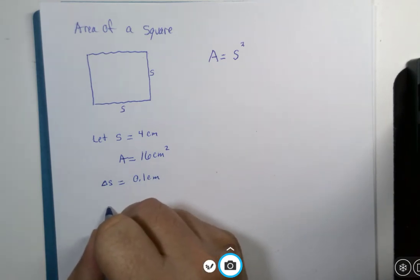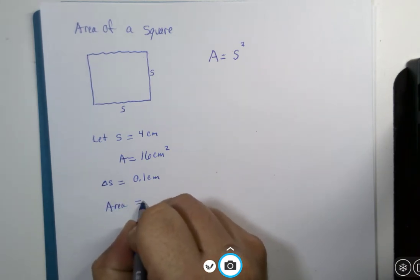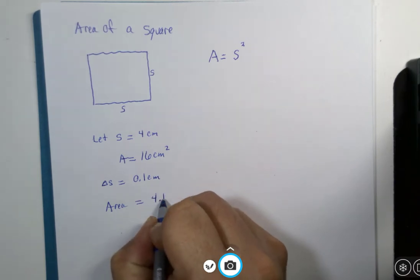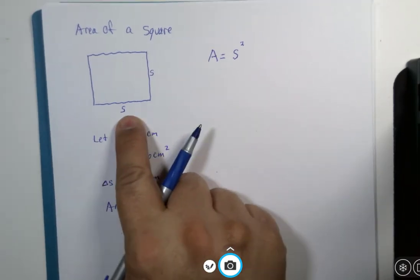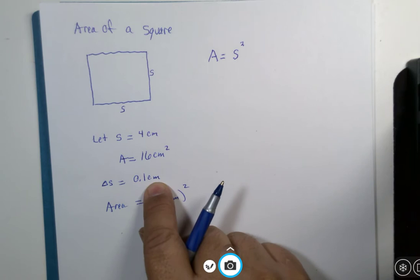If both sides were this much too long, and this number here is 16.81 square centimeters.